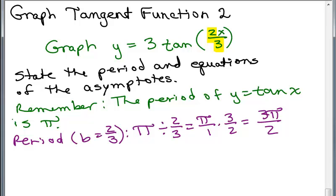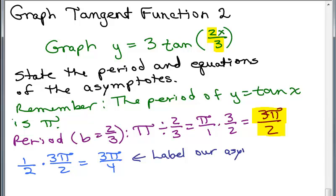Now to get the asymptotes, what we want to do is go over half of that distance to the right and half of that distance to the left. We'll take half of that period, which is half of 3 pi over 2, which is 3 pi over 4. So we've got the full period of 3 pi over 2. If we take half of that, we want to label our asymptotes, x equals negative 3 pi over 4, and x equals positive 3 pi over 4.